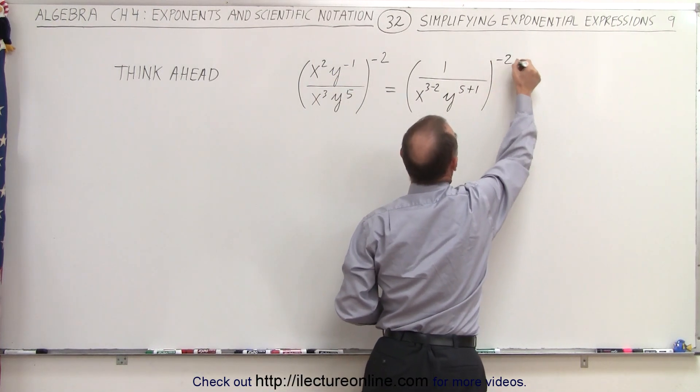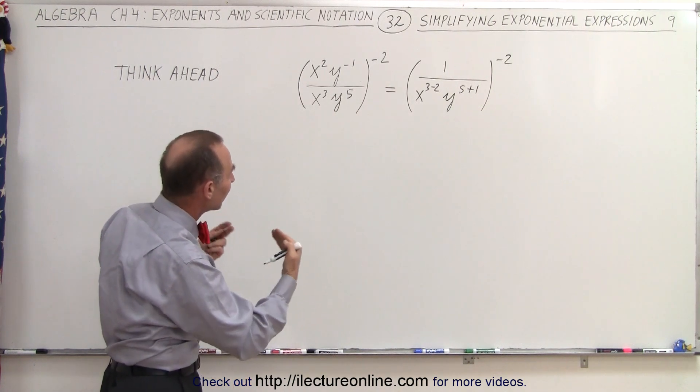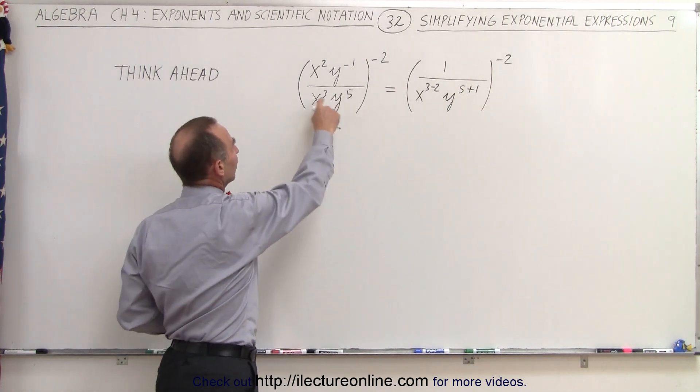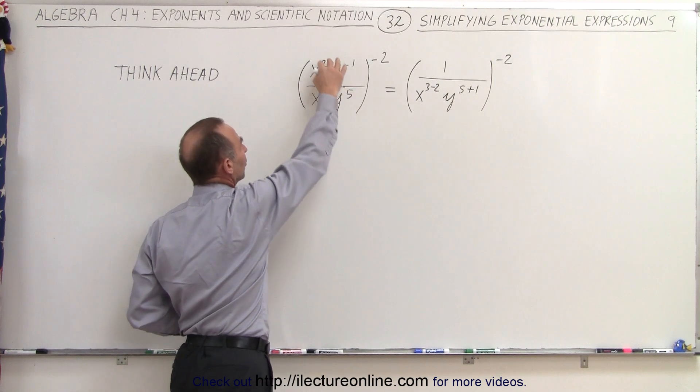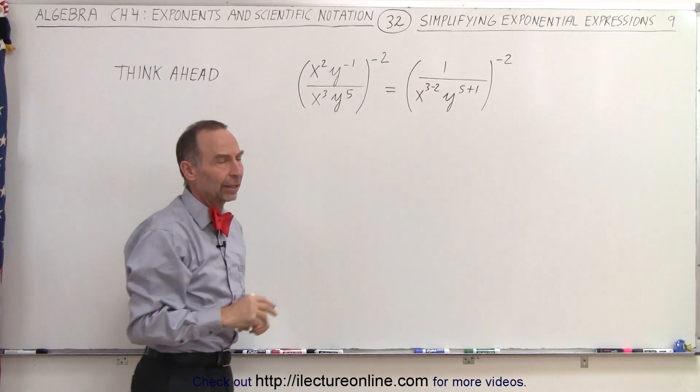So you can see that this becomes a much simpler expression right away by just thinking ahead and realizing where the largest positive exponents are, and moving the other ones down instead of the ones down here up.